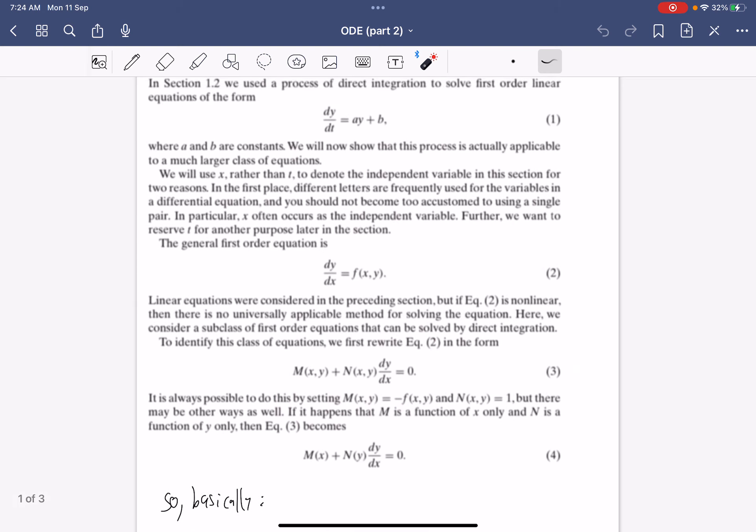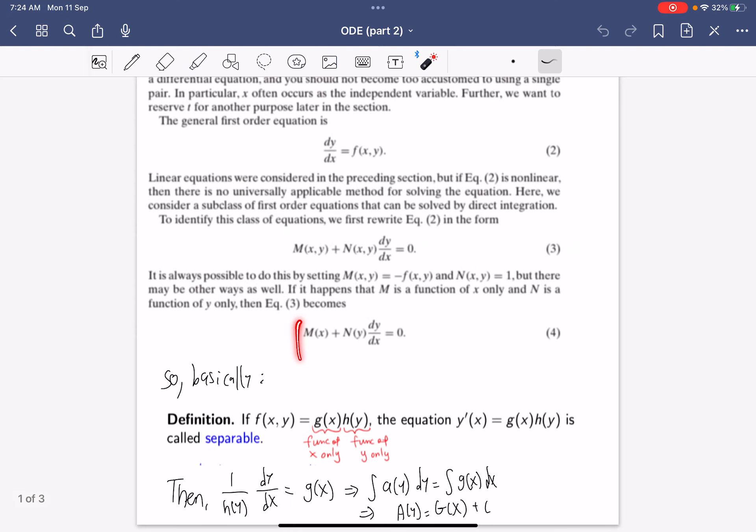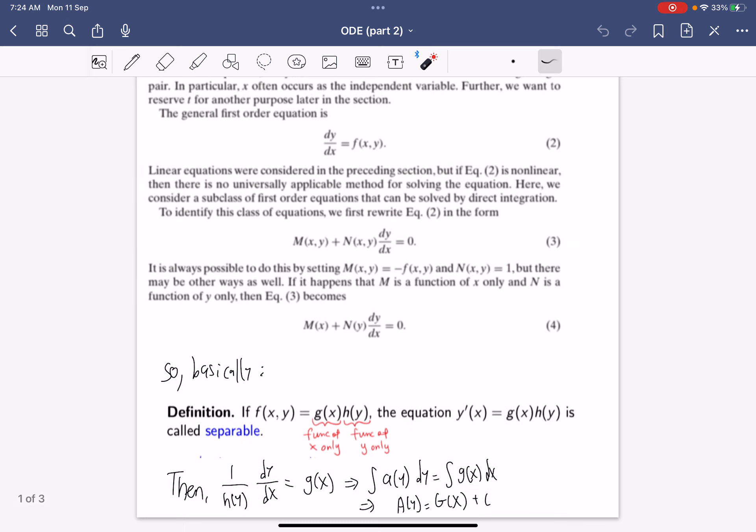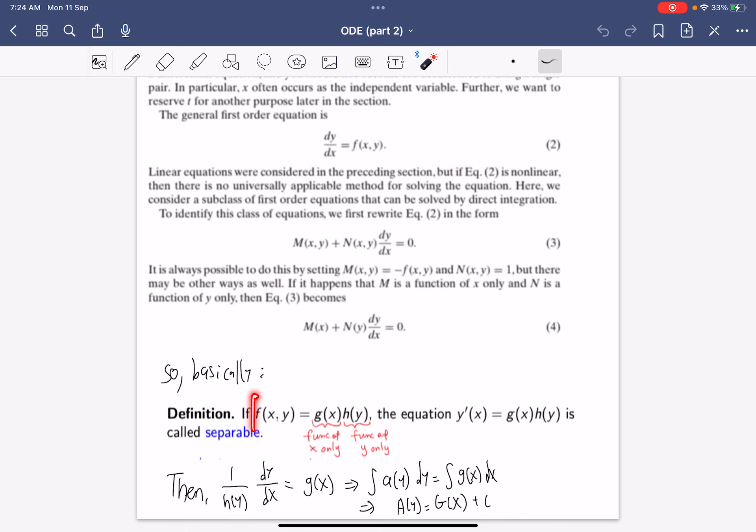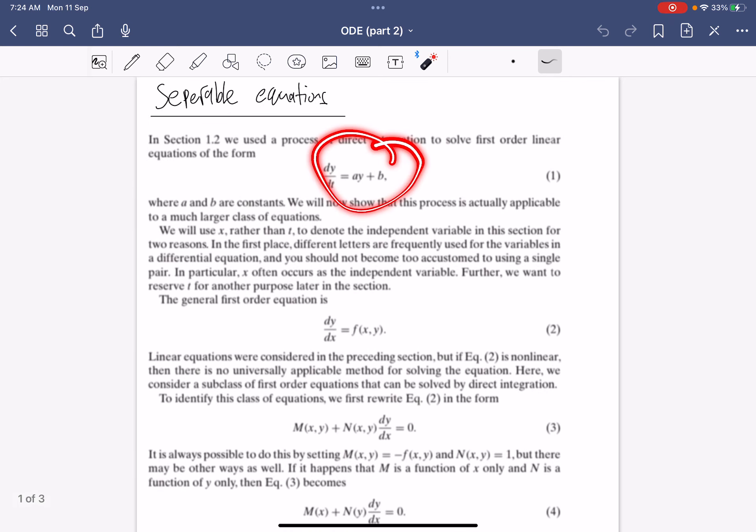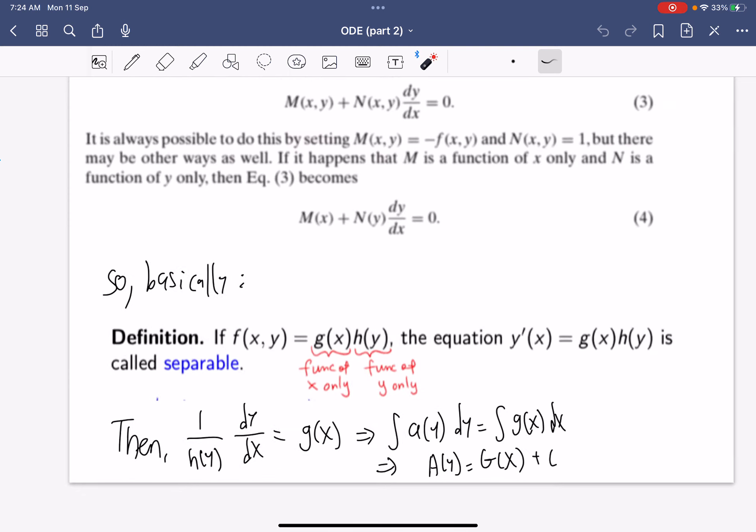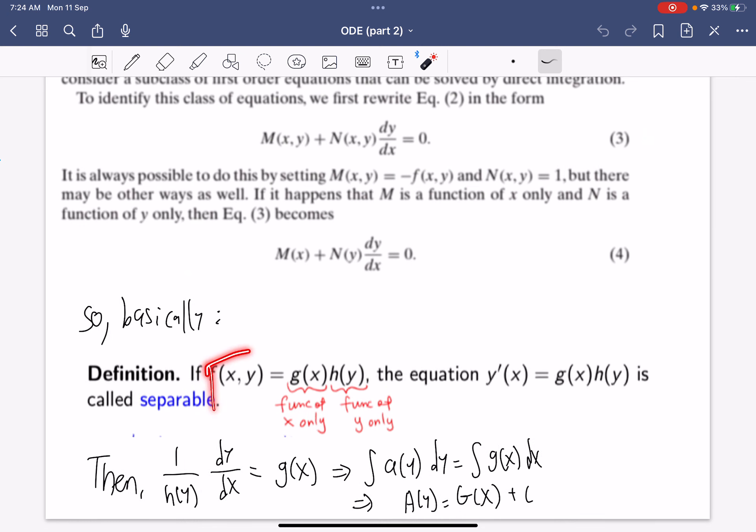We're able to write it down in this form. The gist of it is that the f(x,y) function has a function of x only and a function of y only. This is a separable equation, and you can generalize it to having a function that separates into terms of x multiplied with terms of y.